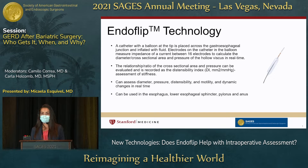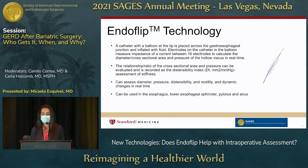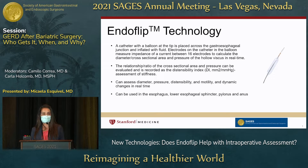The relationship — or the ratio of the cross-sectional area and pressure — can be evaluated and calculated as the distensibility index, an assessment of stiffness or compliance. With Endoflip, we can assess diameter, pressure, distensibility, and motility, and really look at dynamic changes of all of these in real time. It can be used in the esophagus, the lower esophageal sphincter, the pylorus, the anus, and more.